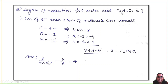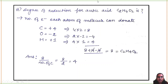Thirteenth question: degree of reduction for acetic acid (CH₃COOH = C₂H₄O₂). Carbon valency = 4, two carbons → 4×2 = 8. Oxygen valency = −2, two oxygens → −2×2 = −4. Hydrogen = 1, four hydrogens → 1×4 = 4. Total electrons = 8 − 4 + 4 = 8. Degree of reduction = total electrons / number of carbon atoms = 8/2 = 4.